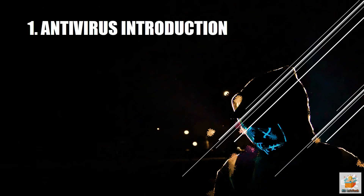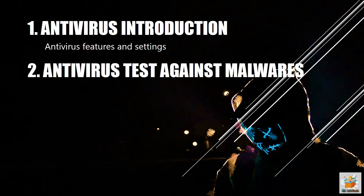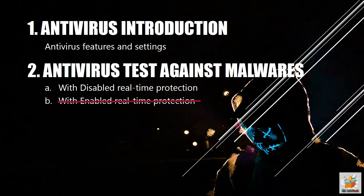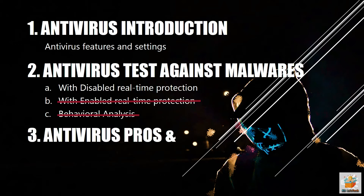In the first section, we will discuss the features and settings of the antivirus. In the second section, we will perform an antivirus test on different malware samples. Here we are performing only one test with disabled real-time protection, because TotalAV does not have active real-time protection with the free version. And in the last section, we will talk about the pros and cons of the antivirus, on the basis of tests performed and features provided.